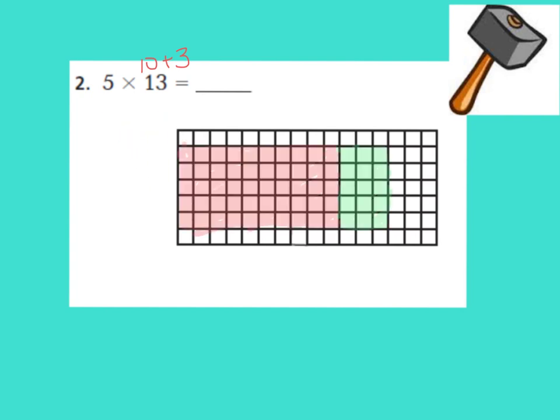We're going to shade in the array to multiply our numbers. Okay, now friends, I want you to make sure that you shade your model just like I shaded mine. We have 1, 2, 3, 4, 5 going down.